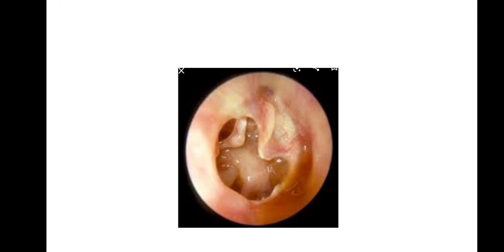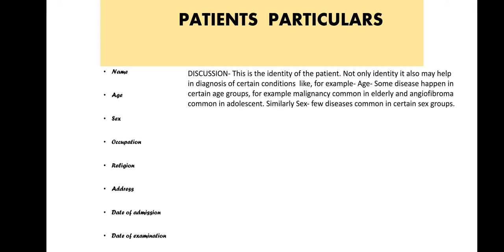This is a picture of chronic suppurative otitis media with a central perforation. At around 12 o'clock you find a small depression which stands for the pars flaccida. Running behind it is a vertically oriented white structure which is the handle of the malleus. Superiorly around 10 o'clock you find the angulated structure which is the incudostapedial joint, and in between is the central perforation.